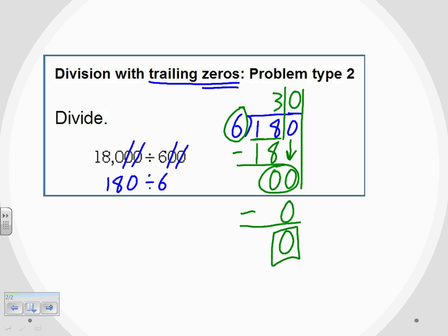So I've used all the digits that I had in 180. It worked out even. I don't have a remainder. So that 3 and the 0 that I have at the top, the 30, that is my solution.